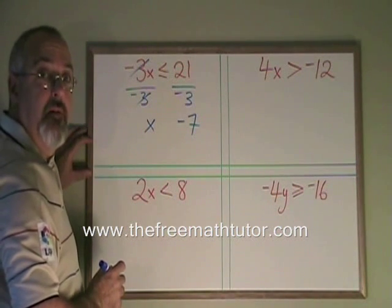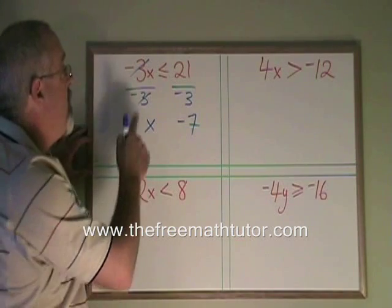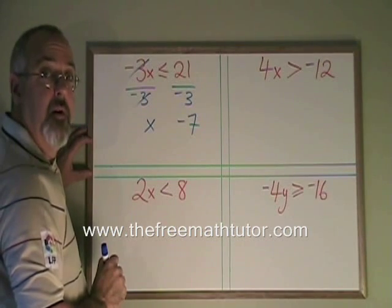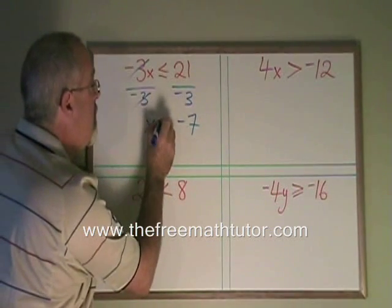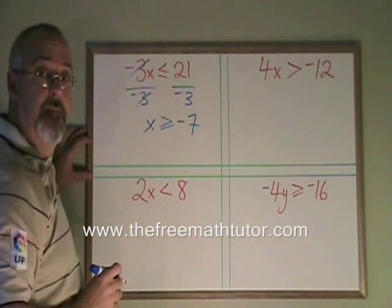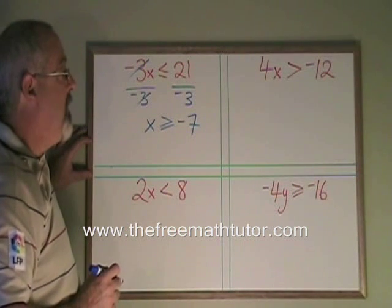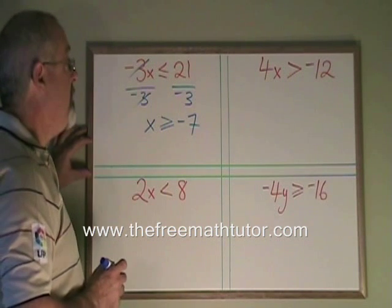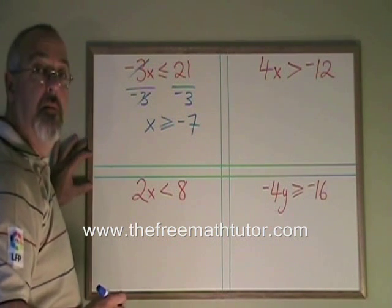But this is where we have a special rule. When we are dividing both sides of an inequality by a negative number, we have to turn the symbol backwards. My less than or equal to becomes a greater than or equal to. This only happens if we are dividing both sides by a negative number.